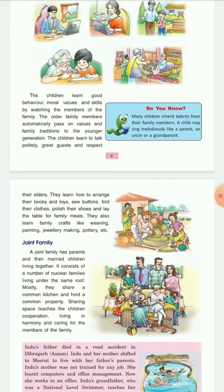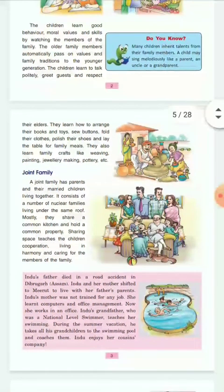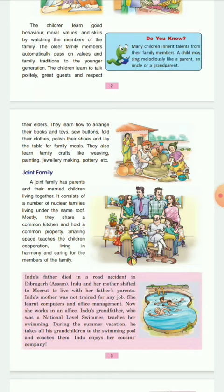We generally see two types of family in India: the joint family and the nuclear family. A joint family has parents and their married children living together. It is made up of a number of nuclear families living together under the same roof, mostly sharing a common kitchen and holding common property.